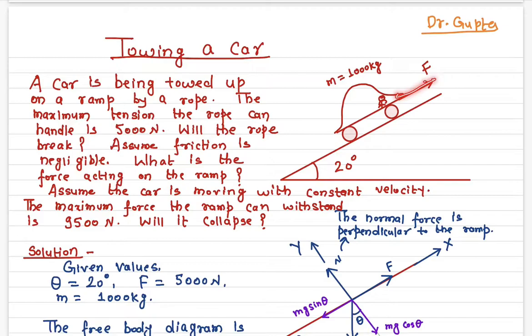It is being pulled upwards by a force. The force is given which is 5000 Newton. The mass of the car is 1000 kilogram and it is being towed up by constant speed. There's no acceleration.